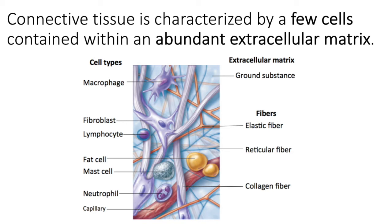The cell types of connective tissue also vary a lot. In the dermis, the primary cell type will be the fibrocyte and the fibroblast. In adipose tissue — that's fat tissue — the cell is going to be an adipocyte. In blood tissue, we have many different blood cells, which we'll cover when we get to that chapter. So cell types vary and we'll talk about each of those cell types when we get to the specific tissue type within this category.